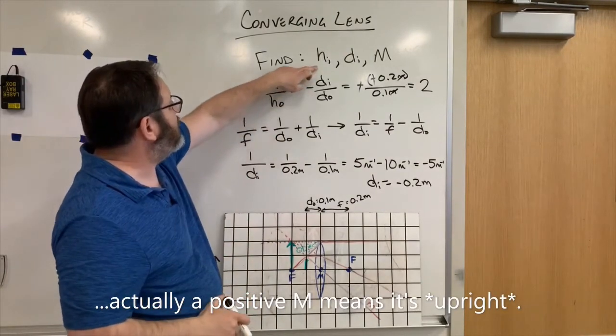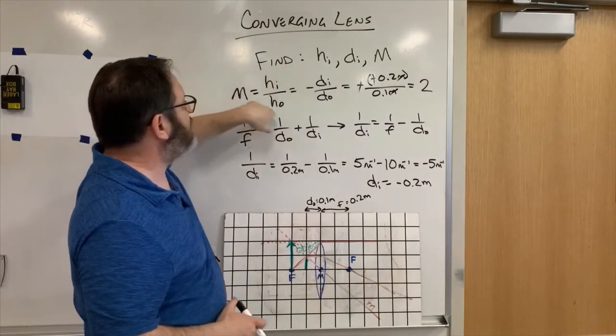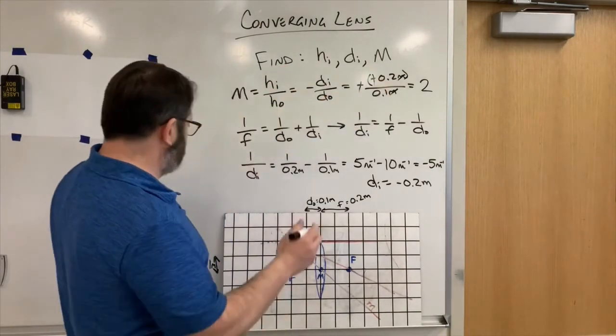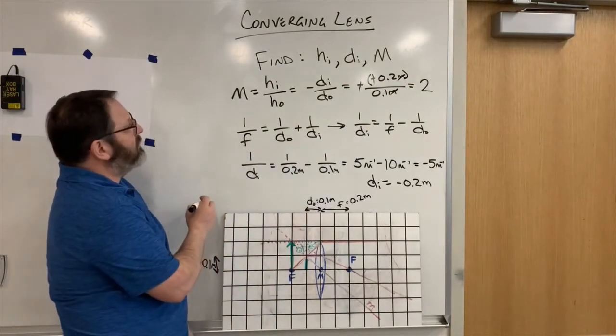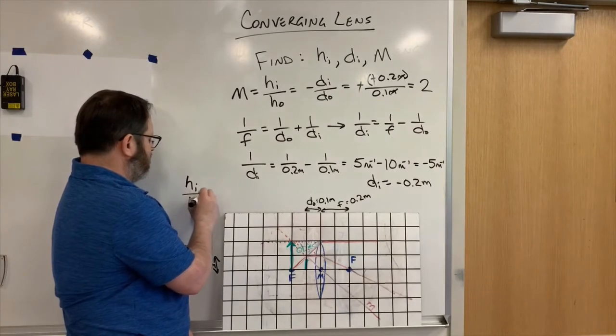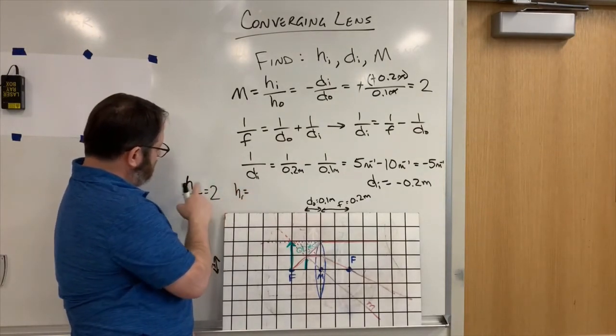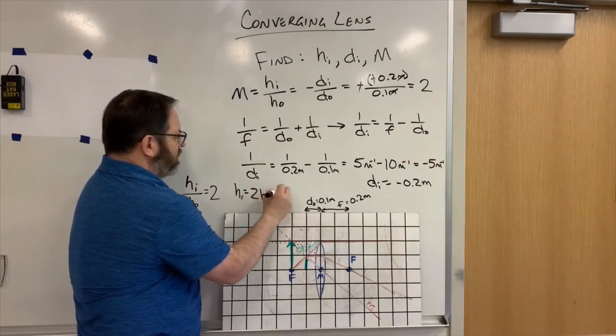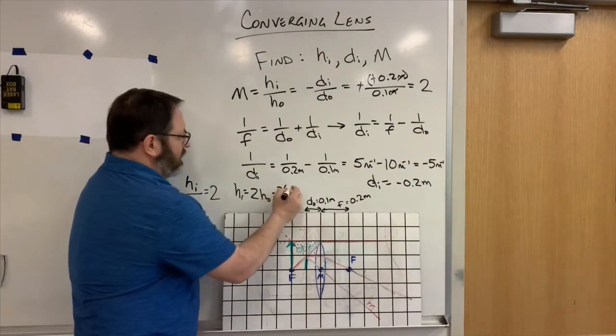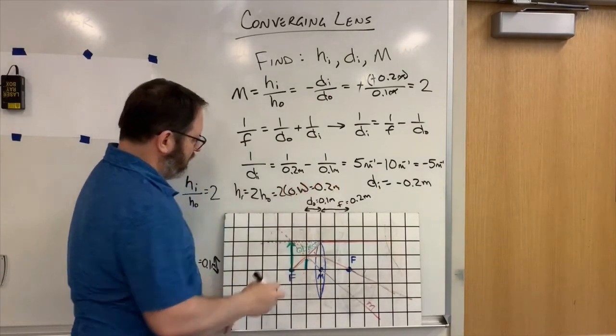So the only thing left now is the height of the image. Well, height of the image over height of the object is 2. So that means height of the image is 2 times height of the object, which is 2 times 0.1 meters equals 0.2 meters, which is what's drawn here.